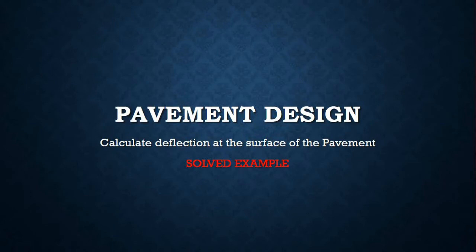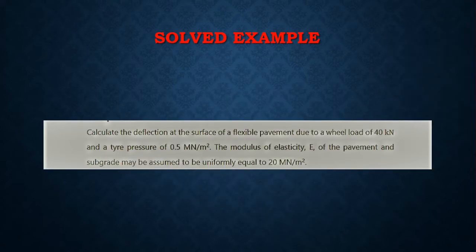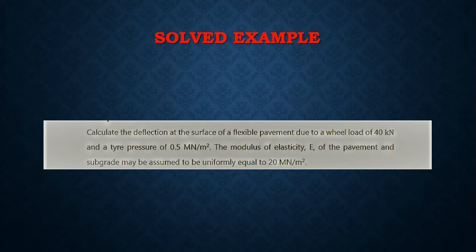I'm going to cover something on pavement design. Here we are calculating the deflection of the surface of a pavement. We have a question where we're supposed to calculate the deflection of a flexible pavement due to a vertical load in newtons and a tire pressure of 0.5 million newtons per meter square. The modulus of elasticity E of the pavement may be assumed to be uniformly equal to 20 million newtons per meter square.